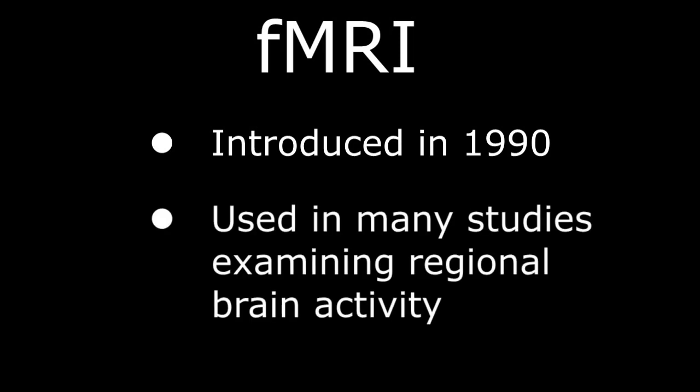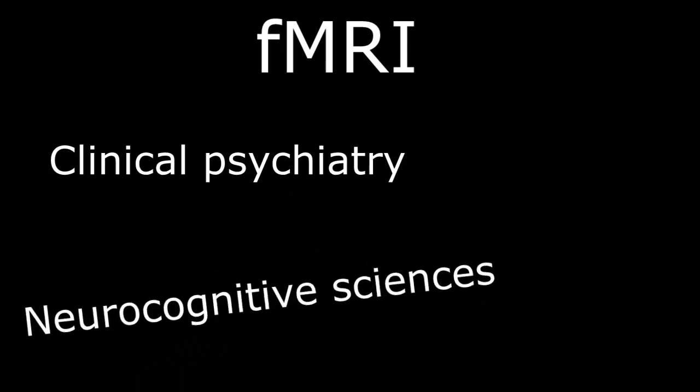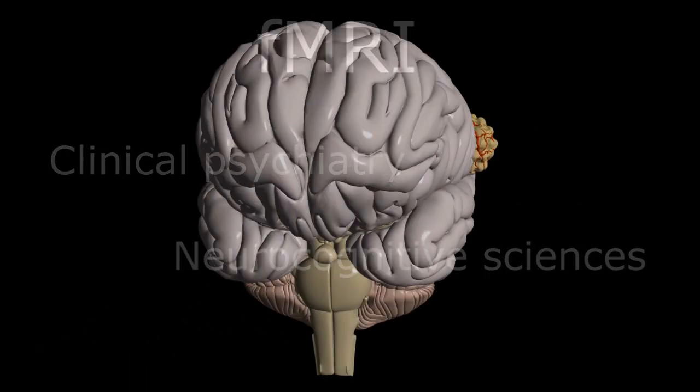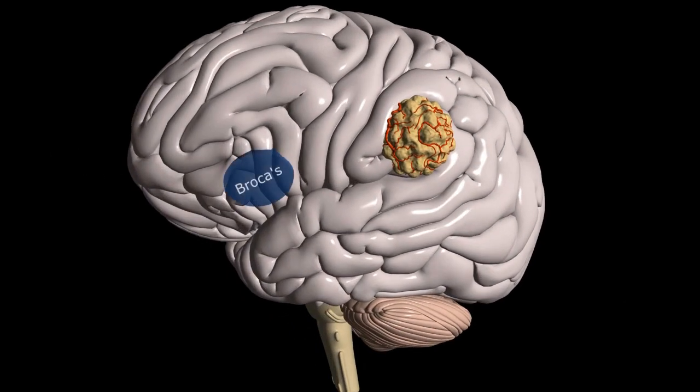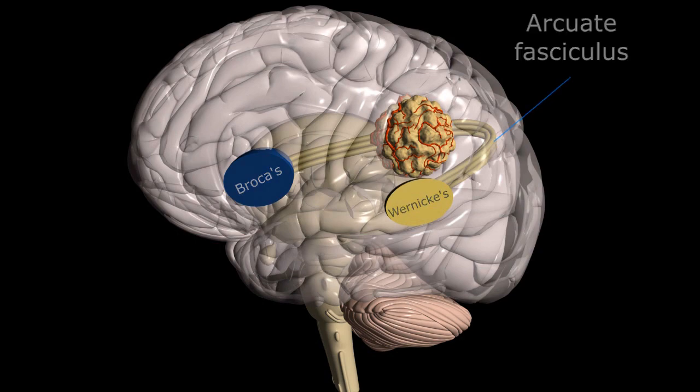Since its inception in 1990, fMRI has been used in countless studies examining regional brain activity in relationship to clinical psychiatry, neurocognitive sciences, and preoperative planning of tumor resection near the eloquent areas of the brain to determine the risk of intervention and estimate potential postoperative deficits.